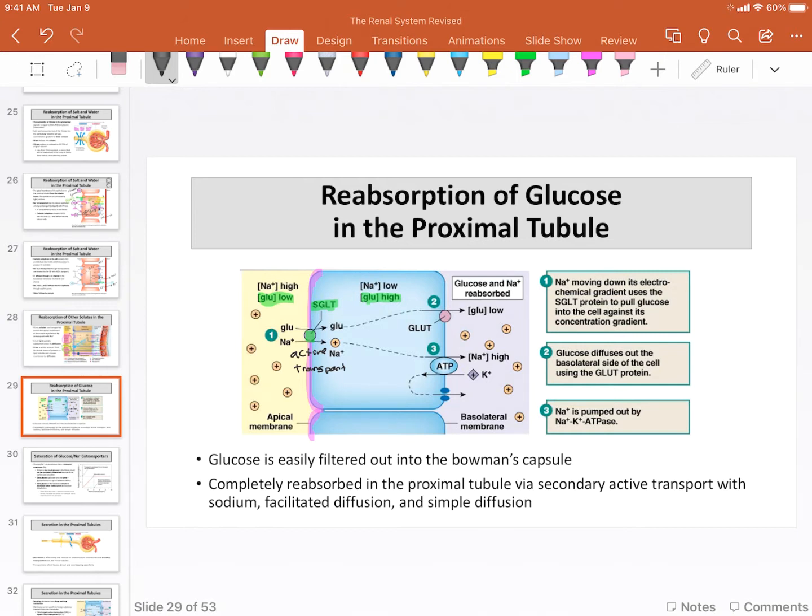Sodium concentrations in the filtrate are quite high, and glucose concentrations, relatively speaking, are low or at least equal to the concentration of glucose that is in the cell. And therefore, this active transport pushes glucose essentially uphill into the cell.